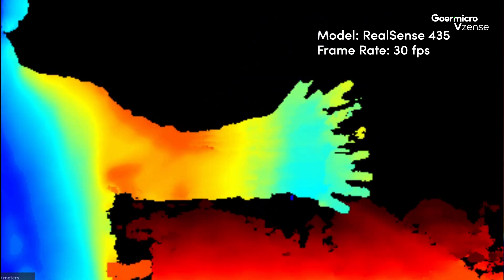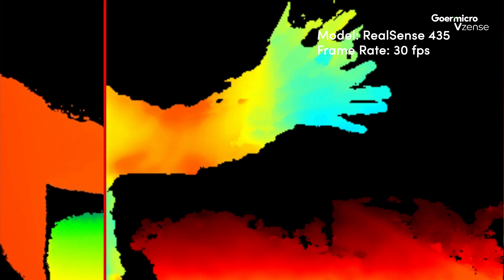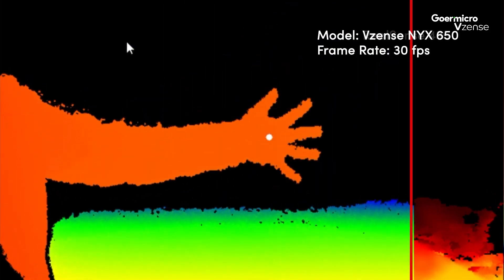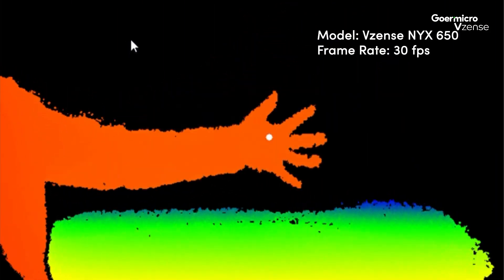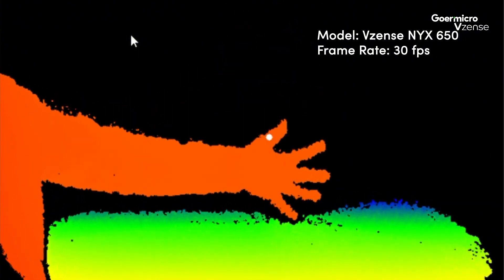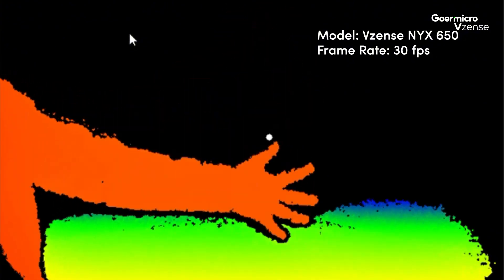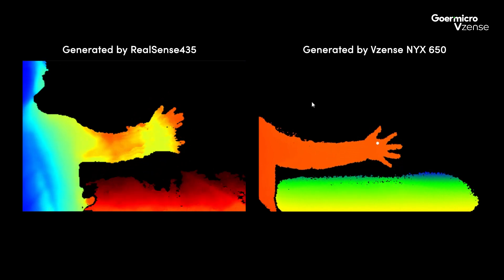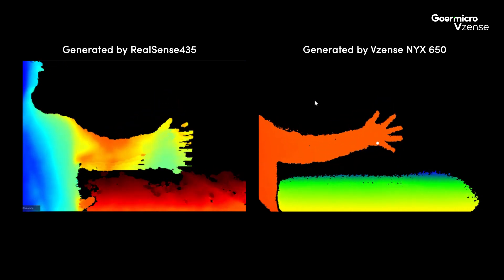The depth map by RealSense shows significant motion blur. In contrast, the NYX depth map does not exhibit noticeable trailing issues, and the shape of the hand remains well defined without significant distortion during movement. Viewing them side by side makes the comparison more obvious.